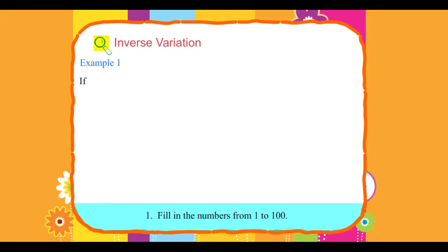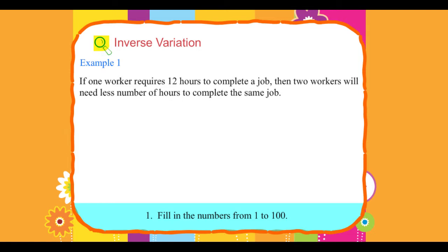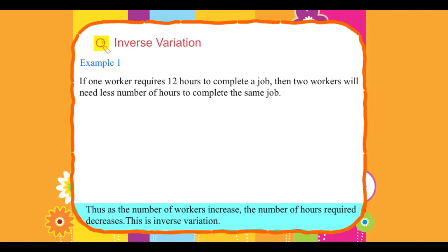Example 1: If one worker requires 12 hours to complete a job, then two workers will need less number of hours to complete the same job. Thus, as the number of workers increase, the number of hours required decreases. This is inverse variation.